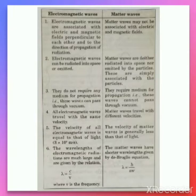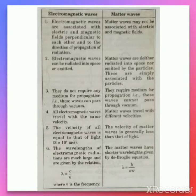Second difference: electromagnetic waves can be radiated into space or emitted. For example, when iron is heated it emits electromagnetic radiation. But matter waves can neither be radiated into space nor emitted by particles — they are simply associated with the particles.